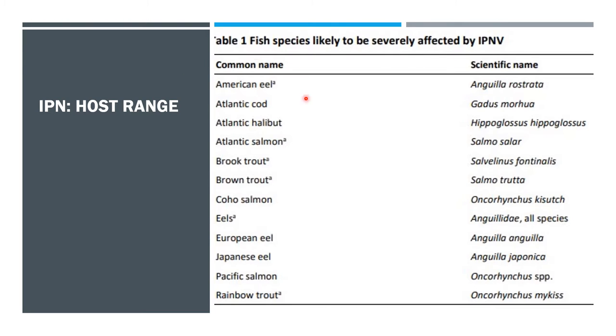This table illustrates the different fish species that are likely to be severely affected by IPNV, including different species of eels, cod, halibut, and salmon.